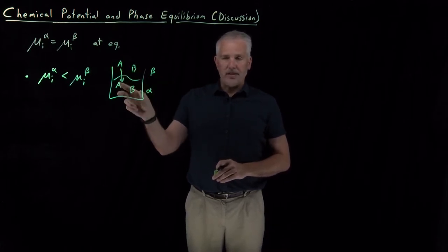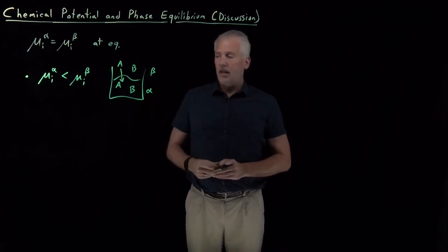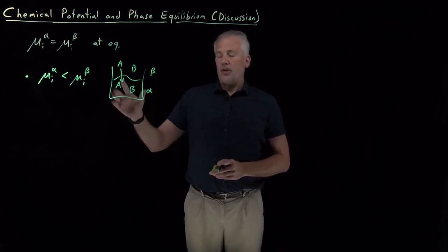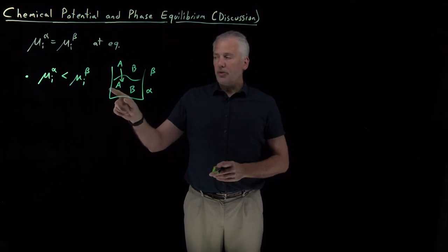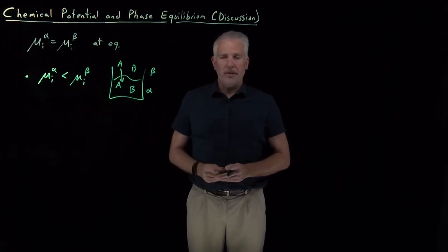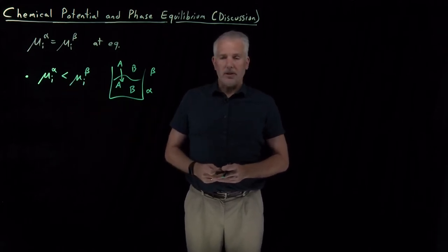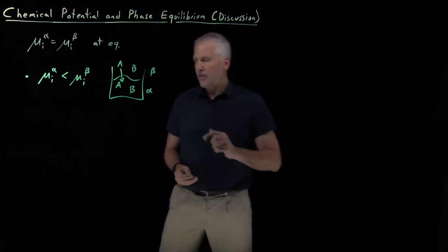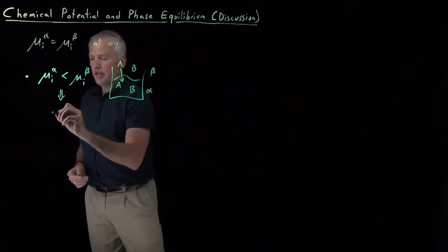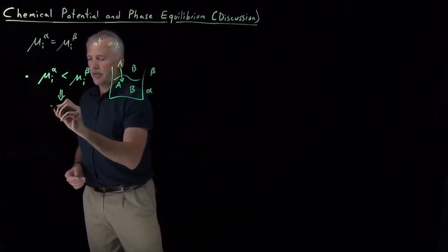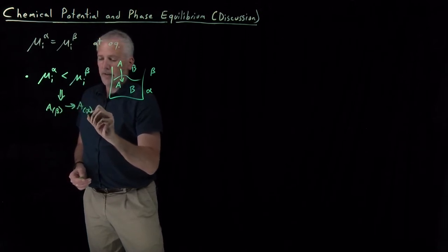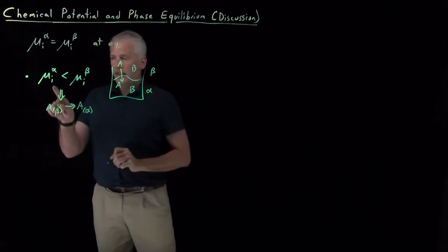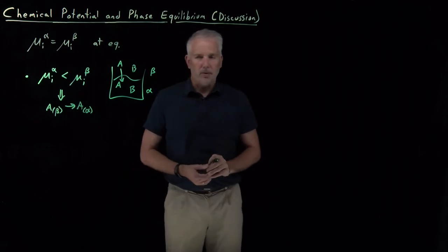If this is a gas and this is a liquid, they'll condense. If one is a solid and one is a liquid, it might melt or it might freeze, but molecules are going to spontaneously move to the phase with lower chemical potential. So molecules of A in the beta phase will convert to molecules of A in the alpha phase, if the alpha phase has lower chemical potential.